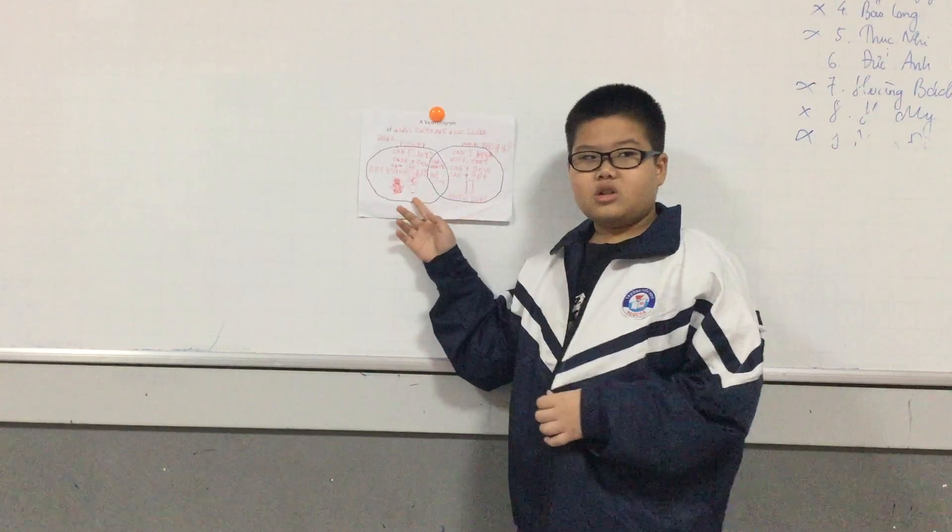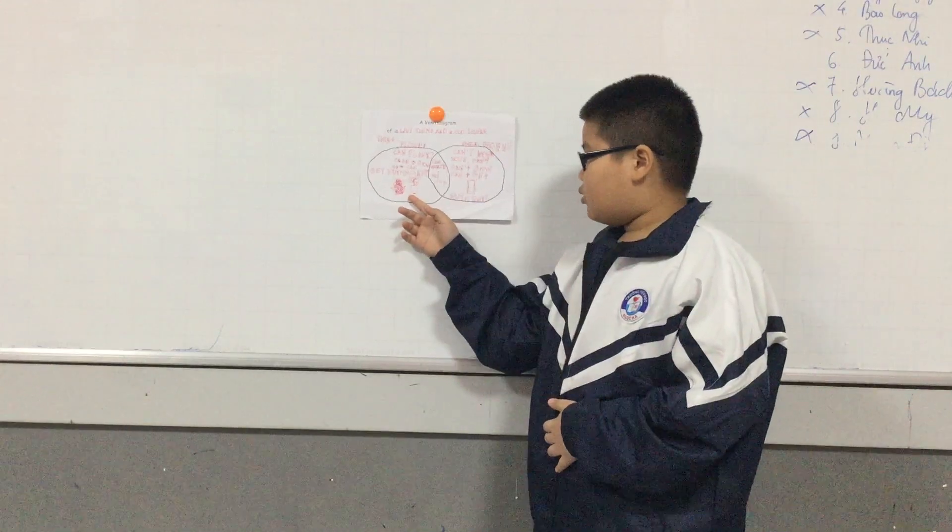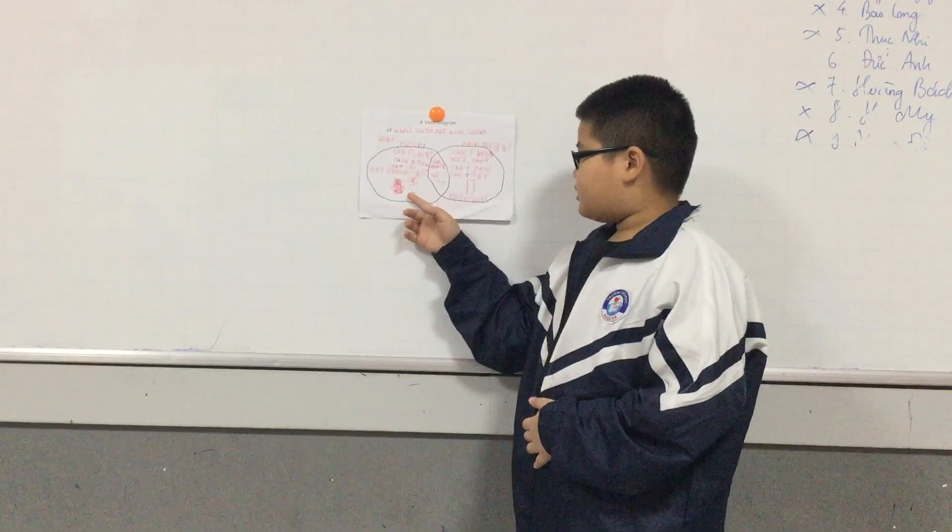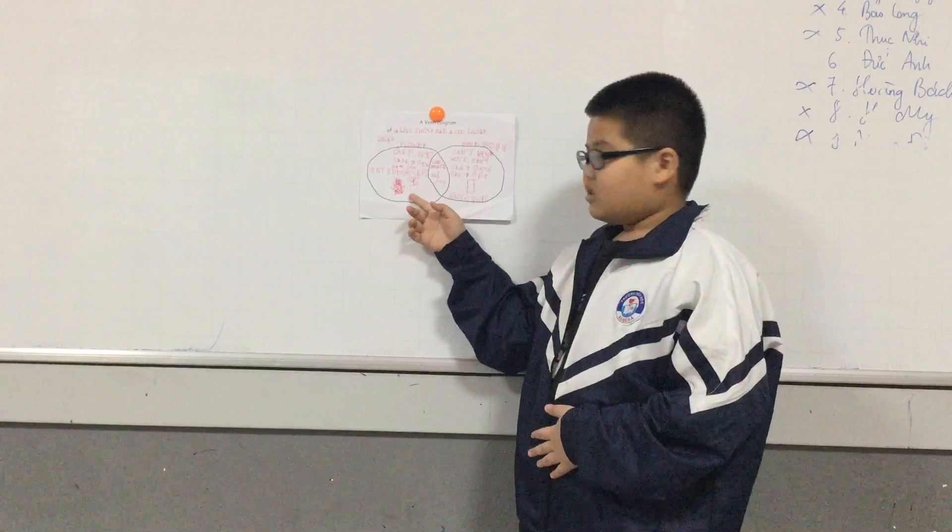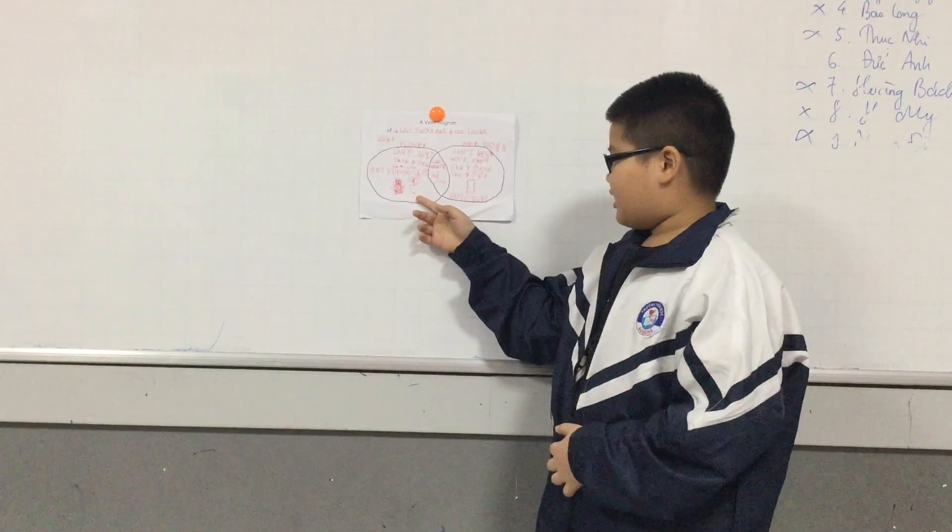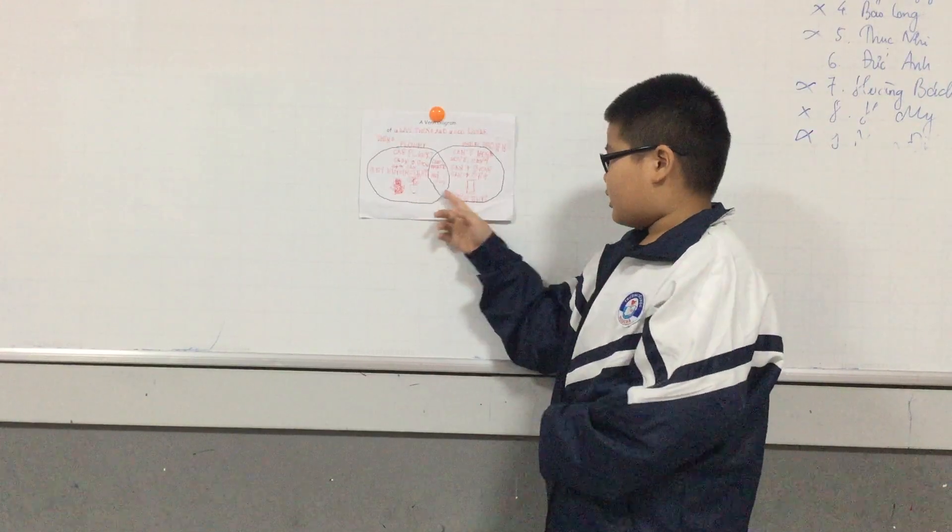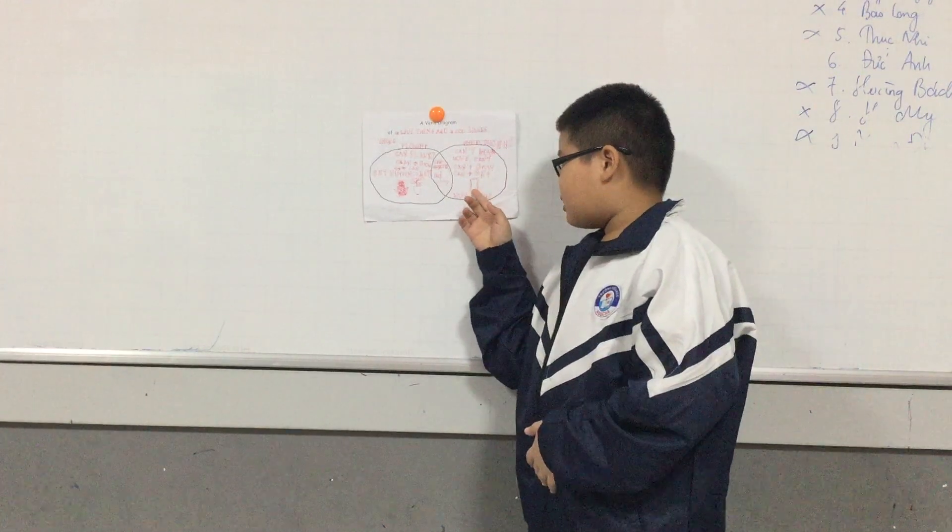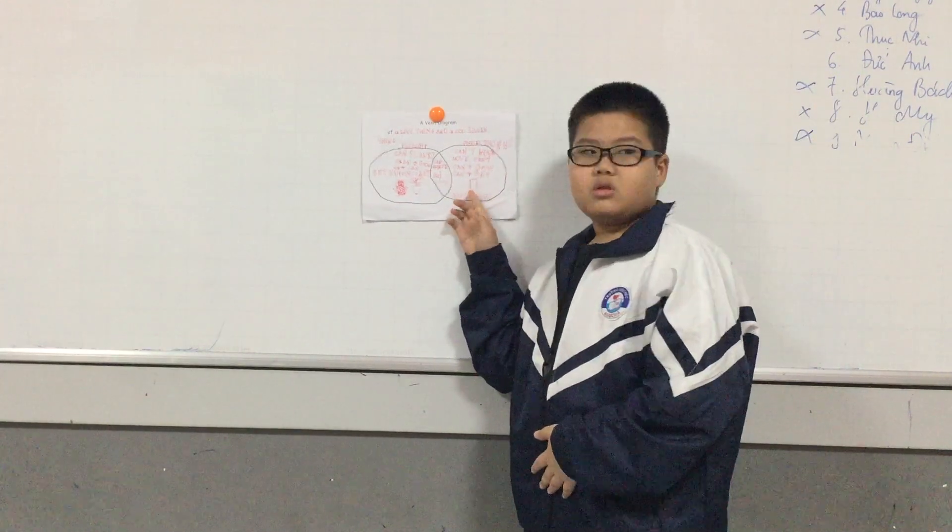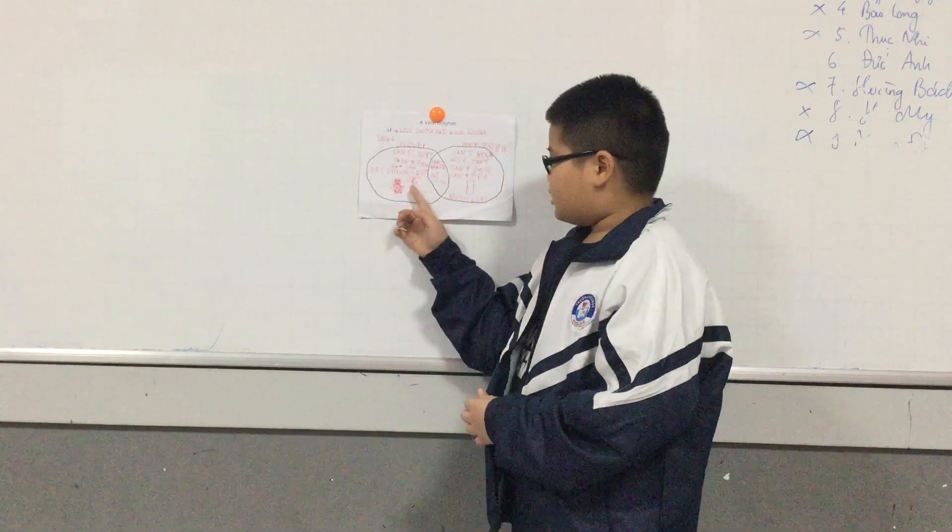A flower can grow with the sun. A flower can grow in a bowl and a stone can't grow.